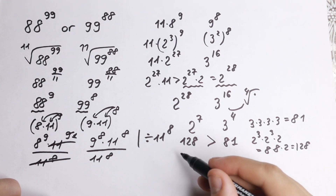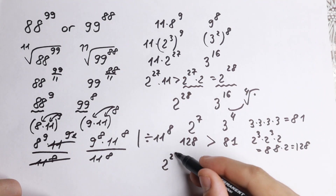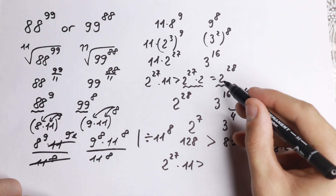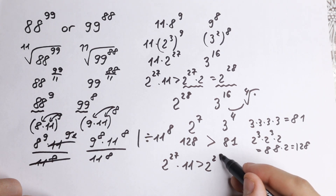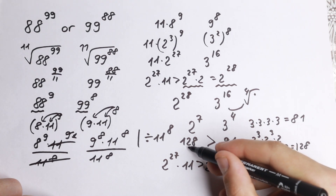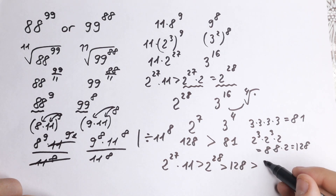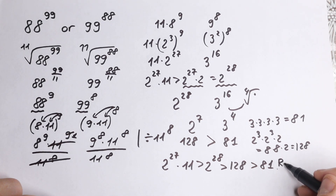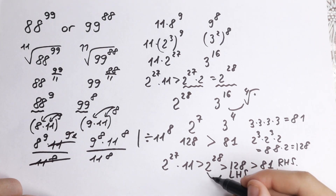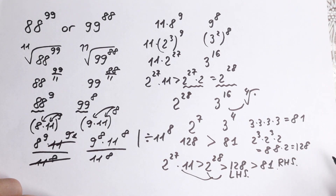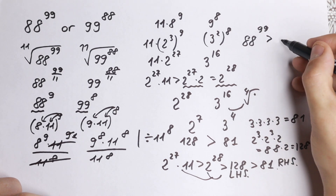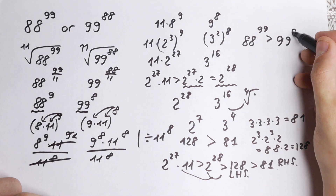Let's write our final inequality. We have 2 to the 27th times 11, which is greater than 2 to the 28th, which is greater than 128, and 128 is greater than 81 — our right hand side. So our left hand side is greater throughout. Therefore, 88 to the power 99 is greater than 99 to the power 88.